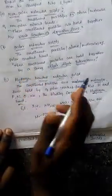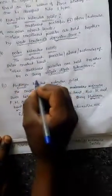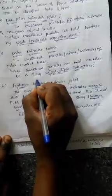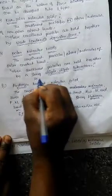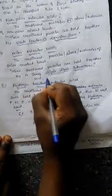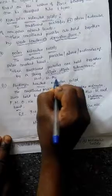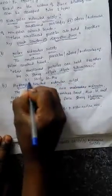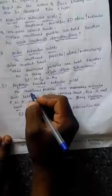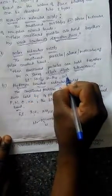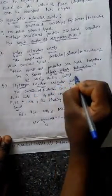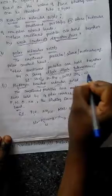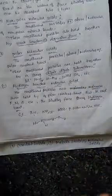In polar molecular solids, examples include solid HCl, solid HBr, and solid sulfur dioxide (SO₂). These are examples of polar molecular solids.